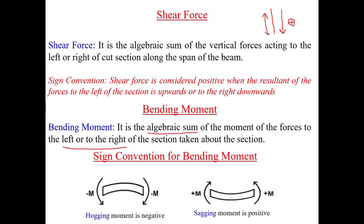The sign convention for bending moment is defined in terms of hogging and sagging moments. The sagging moment is positive. In terms of the section plane, to the left of the section the clockwise moment is positive, and to the right of the section the anti-clockwise moment is positive. You may follow other sign conventions as in many textbooks, but it is always recommended that you follow a unique sign convention consistently.